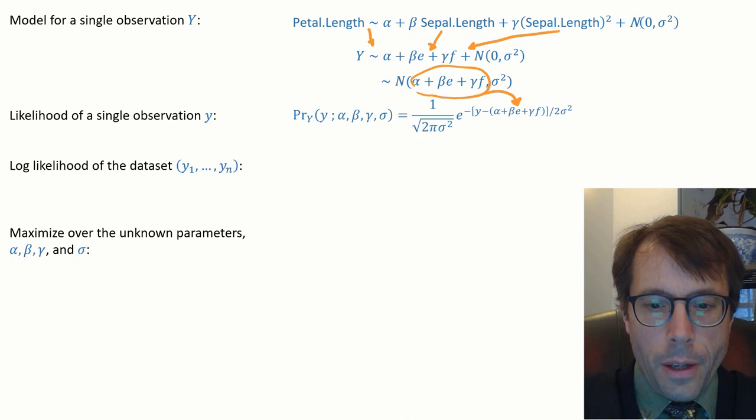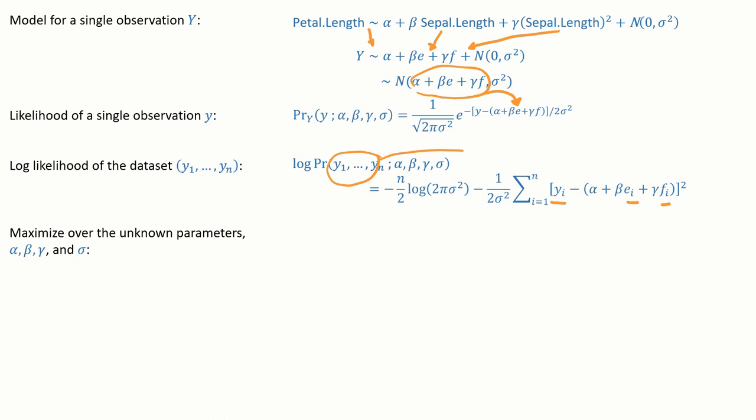Next, write out the likelihood of a single observation little y. The distribution depends on e and f too, of course, but it's a bother to write them out all the time. Now remember, don't just blindly copy out a density function from Wikipedia. You need to substitute in the parameters. In this case, we're substituting in alpha plus beta e plus gamma f for the mean of the distribution.